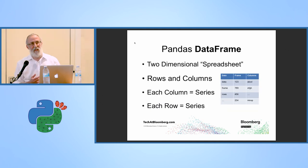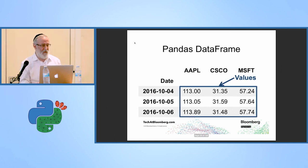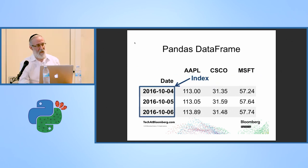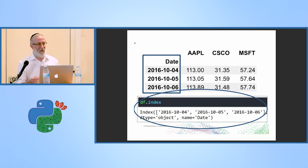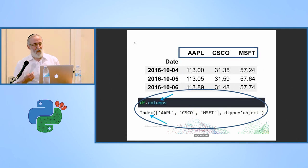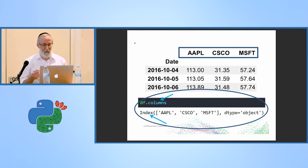A data frame is a two-dimensional spreadsheet — you have rows and columns. Each column is a Pandas series and each row is a Pandas series. The data frame has the same parts: values, index, index name, and now columns. Notice that both the columns attribute and the index attribute are index objects — hash tables pointing to data. On the horizontal axis we call it columns, on the vertical axis we call it index, but they're both indexes.